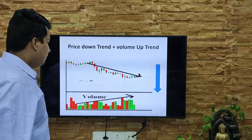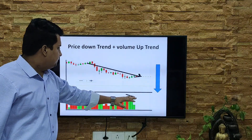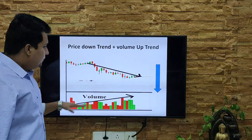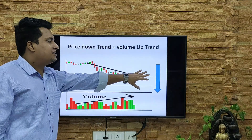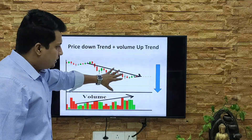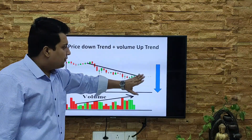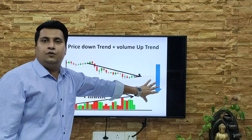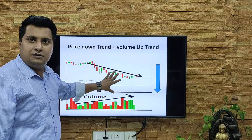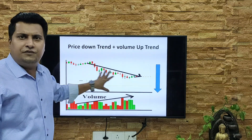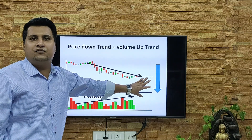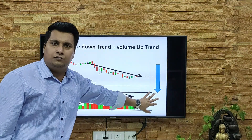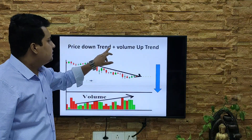Fourth case: price in downtrend and volume in uptrend. When volume is going up and price is going down, it again shows strong potential to the downside. In this case, instead of buying you should go for a short-term sale. Find the entry point, find the exit point, and go for the sale. Don't wait for the market to reverse — it will not reverse from here, it will go down further. Remember: price in downtrend plus volume in uptrend means you should sell.